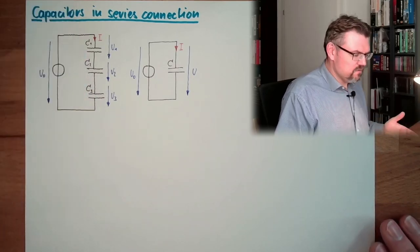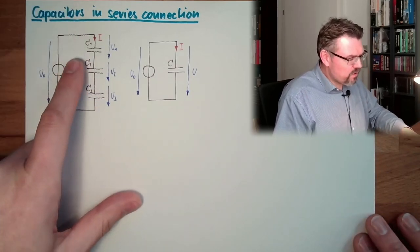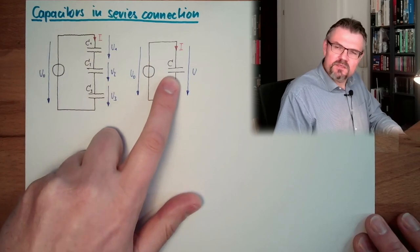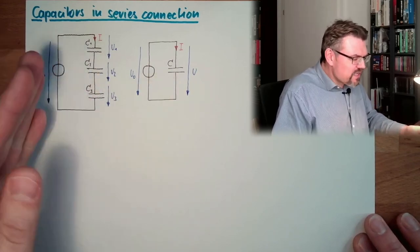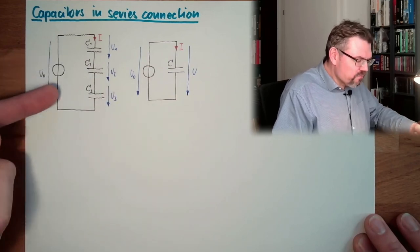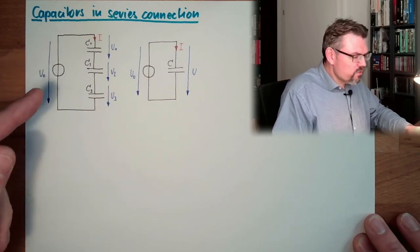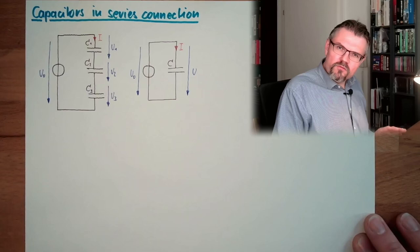And I want to replace this C1, C2, C3, with a replacement capacitor C, which should, from outside point of view, from the voltage source point of view, should be no difference at all.